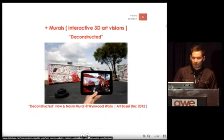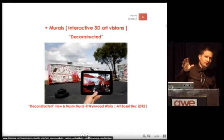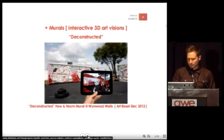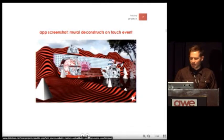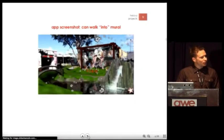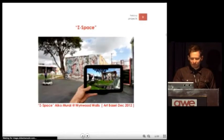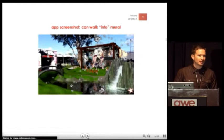This is from December 2012 at Art Basel in the Wynwood Walls section of Miami. This is a piece we did over a Howa Naza mural. Our piece is called Deconstructed — it allows you to interact with the mural, touch it, pull it apart. You can see the elements of the mural deconstructing, and in the full animation they put themselves back together again. We also have what we call Z-Space, which allows you to walk actually through the mural — you can walk underneath her legs and into the mural space. So you can see the real mural in the background, and the AR space is interactive and immersive.